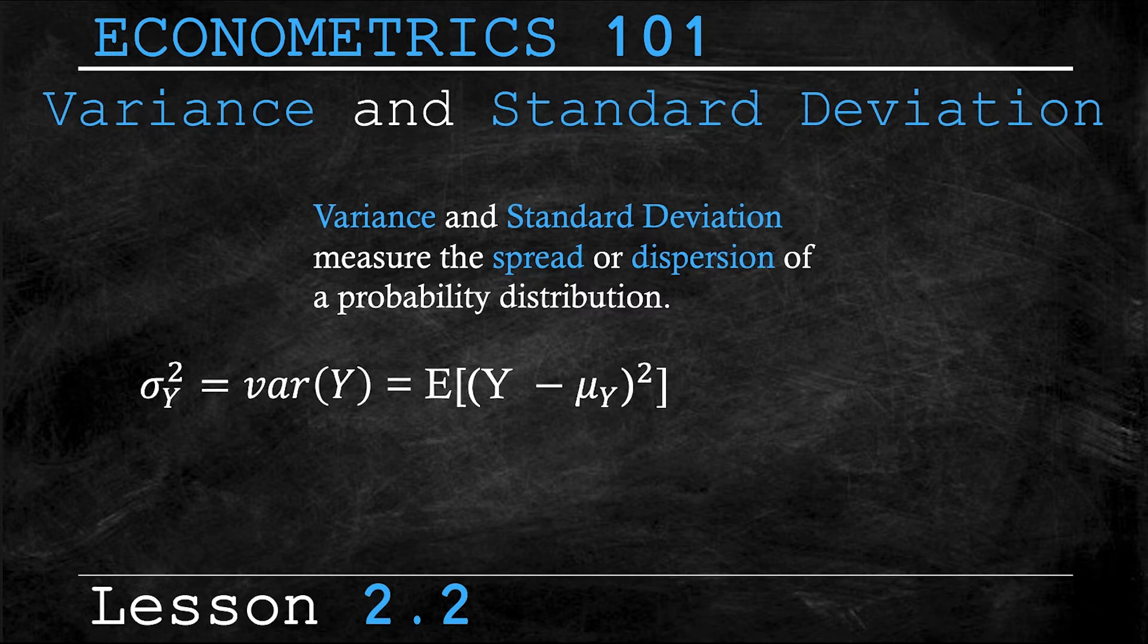How far an outcome is from the average is called the spread, and that's what variance and standard deviation are a measure of. Looking at this formula, we see that we're taking the difference between the actual outcome, uppercase Y, and the mean, which is μ_Y, and then we square that difference. So where does the E come from? Well, we must take the value from each of the outcomes 1 through k, just as we did for the mean.